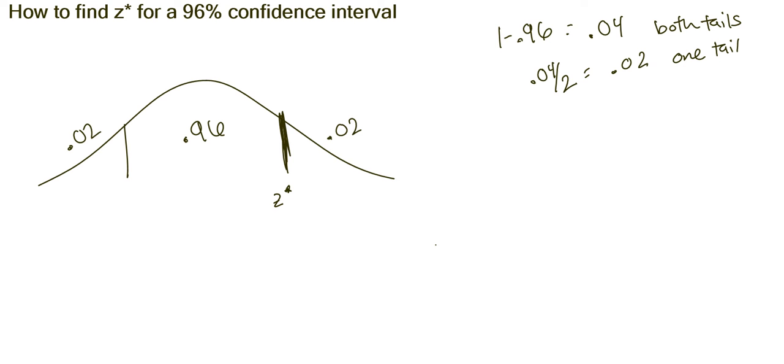There are two ways you can do this. Either way, you're going to get the right answer. I can look up, because our table only gives us areas to the left. It doesn't give us areas in the middle. So I can look up what this line is, and it has .02 to the left.